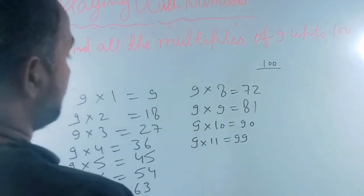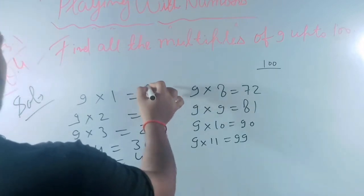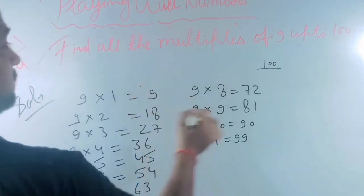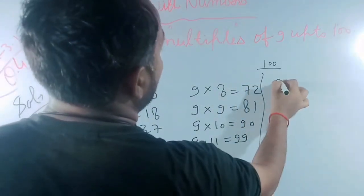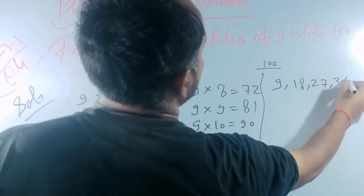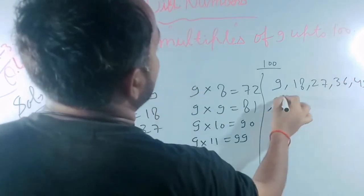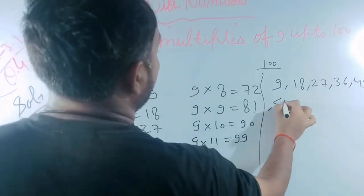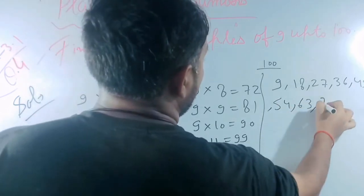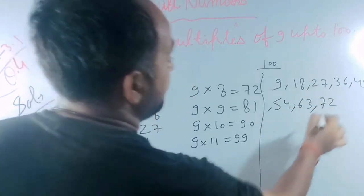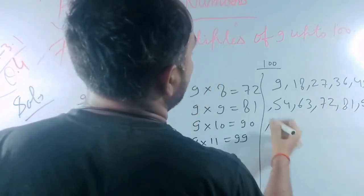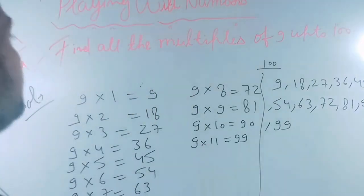If we go beyond 99, we will cross the limit because we have to find up to 100. So these are the multiples of 9: 9, 18, 27, 36, 45, 54, 63, 72, 81, 90, and 99.